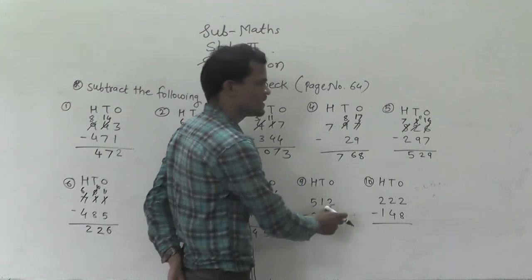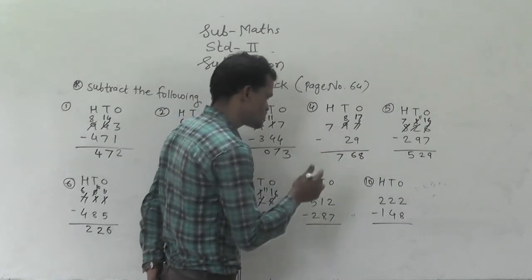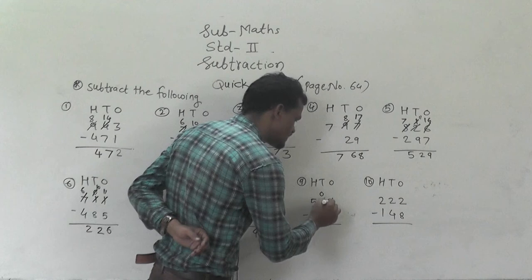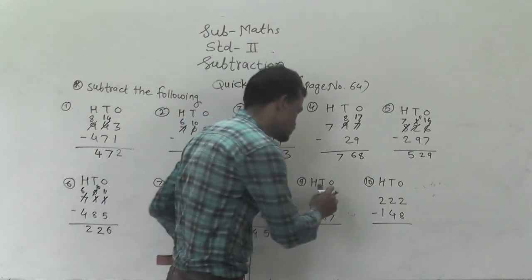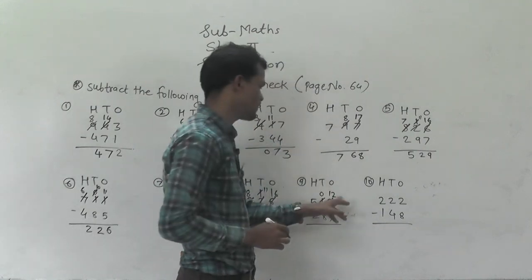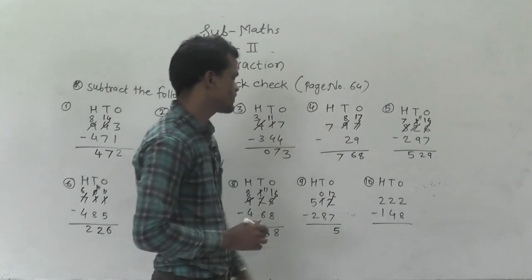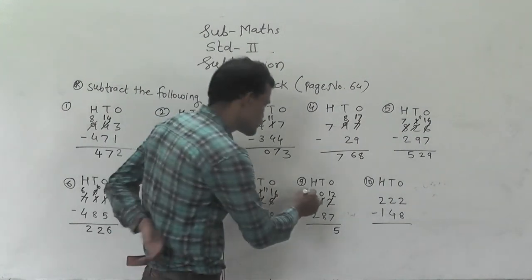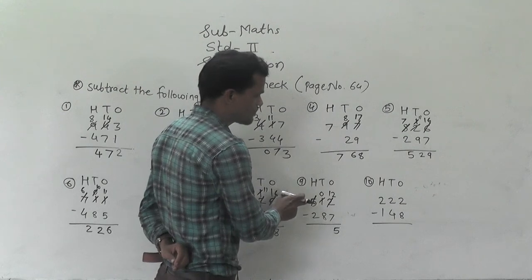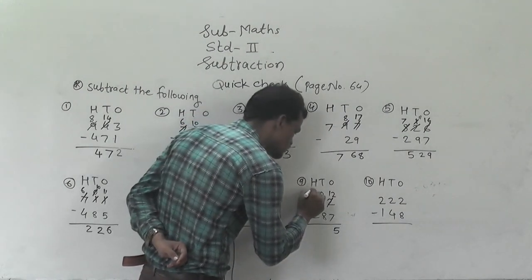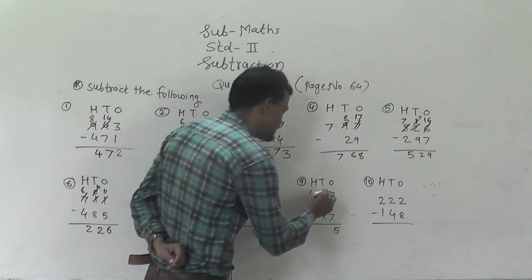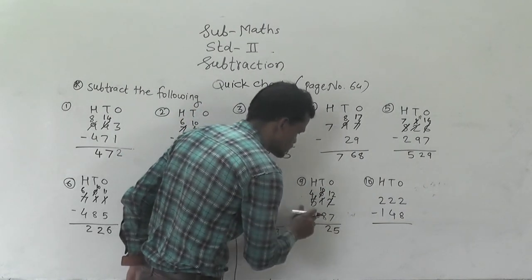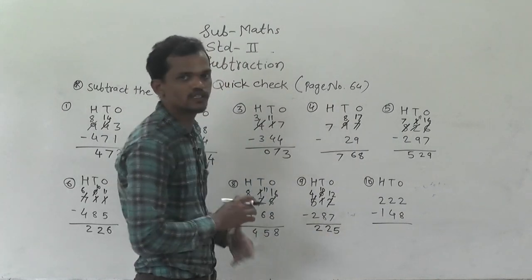Next example: 512 minus 287. Here 2 minus 7 — not possible. So regroup the tens digit into 0 tens and add that 10 ones into this 2 ones, giving 12 ones. 12 minus 7 is 5. Next, subtract the tens digit: 0 minus 8 — not possible. So regroup this 5 hundreds into 4 hundreds and 10 tens. Now 10 minus 8 is 2, then 4 minus 2 is 2. So 225 is the answer.